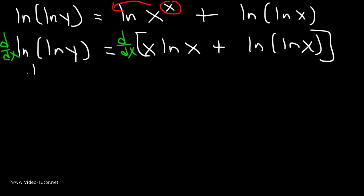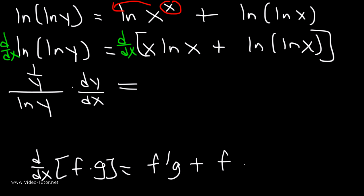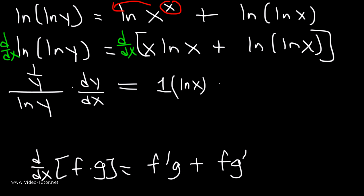So this is (1/y) divided by ln(y), times dy/dx. Now for the derivative of x·ln(x), we need to use the product rule. The derivative of f·g is f′g + fg′. The derivative of x is 1, so the first term is 1·ln(x). Then we leave x the same and differentiate ln(x), which gives 1/x. So the derivative of x·ln(x) is ln(x) + x·(1/x).